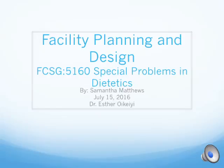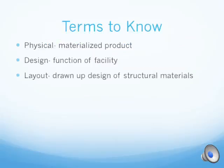Facility Planning and Design by Samantha Matthews. Before we begin, there are some terms you need to know. Physical is a materialized product that takes up volume and space, such as an oven or a refrigerator. Design is the function of facilities, such as cafeteria style or restaurant style. And layout is the drawn-up design of structural materials, which includes anything such as walls, floors, doors, windows, and all equipment.